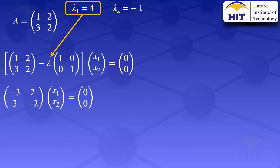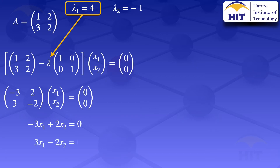Using matrix multiplication, we multiply row by column. The first row multiplied by the column vector x1, x2 gives us minus 3x1 plus 2x2 equals zero. For the second row, 3 and minus 2 multiplied by the column vector gives us 3x1 minus 2x2 equals zero. Numbering these as equation 1 and equation 2, we see they are one and the same — multiplying equation 1 by minus 1 gives equation 2.